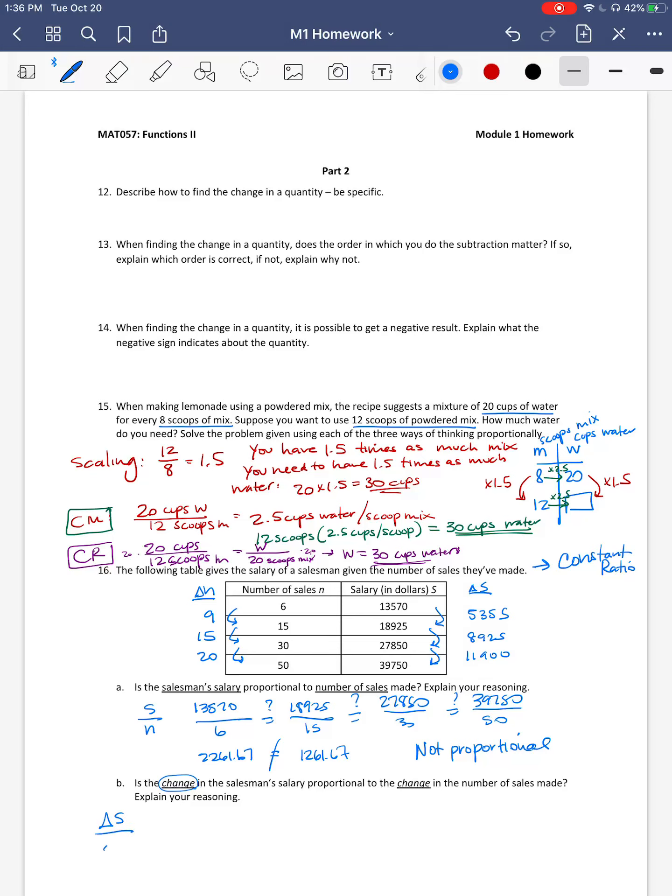So then I'm going to look and say is the change in salary to the change in number of sales the same? So I will do 5,355 over 9. Is that equal to 8,925 over 15? And is that equal to 11,900 over 20? So when I put the first one in my calculator, I get 595. When I put the second one in my calculator, I get 595. I can't stop there because in order to show that it's always the same, the proportionality, you have to show it's always the same. So I do have to stop and keep going and find out that this is also 595. And so the answer here is yes, the ratio of the change in salary to the change in number of sales is constant. So those quantities are proportional.